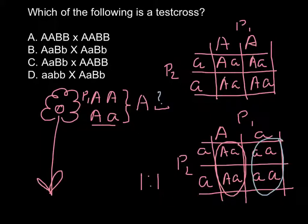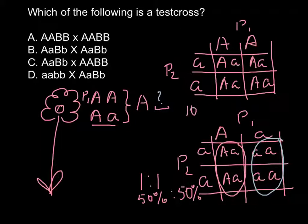We can also say 50% to 50%: 50% would be tall plants and 50% would be small plants in the F1 generation. In the first example, all 100% of the plants would be tall.